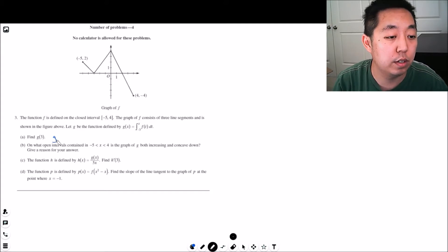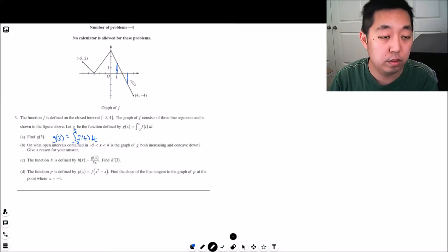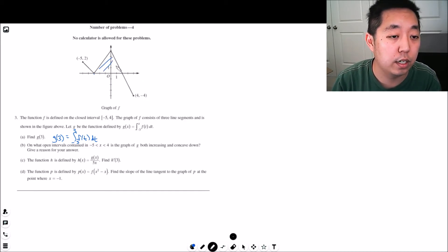So g of three by definition is the integral from negative three to three of f of t dt. This is area under the curve, right? The area from negative three to positive three is this part. See it crosses two here. I'm going to do all of this area and then minus this area right here.